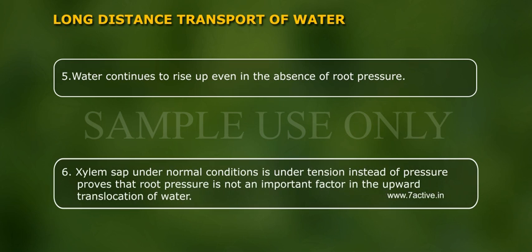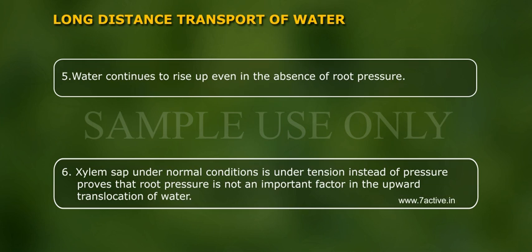Sixth, xylem sap under normal conditions is under tension instead of pressure. This proves that root pressure is not an important factor in the upward translocation of water.